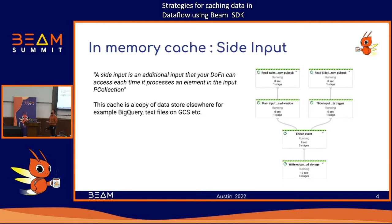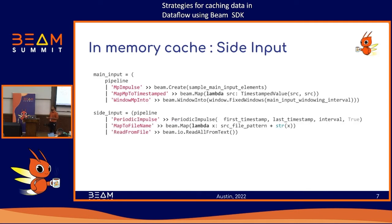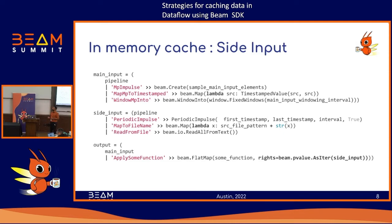The side input comes from a different source and can be used for data enrichment before going downstream. For example, your main input might come from PubSub or files from GCS. In the Beam world, when you apply a transformation, you pipe the input and get an output. With side input, you have your main PCollection plus an additional PCollection — the side input from a different source such as GCS — and you pass both to the processing function, for example as an iterable.